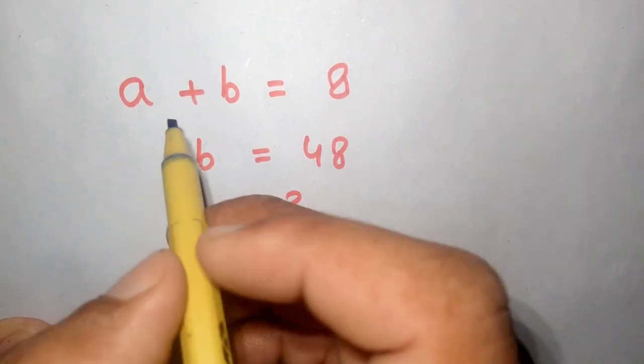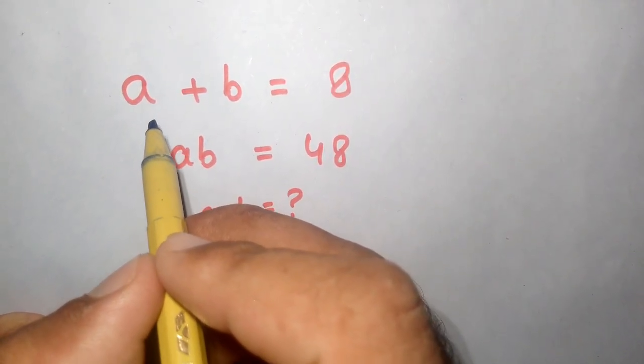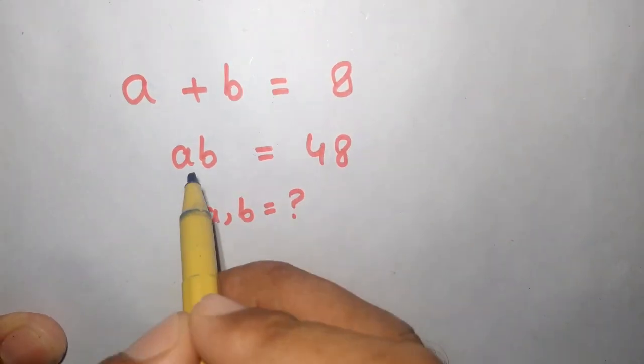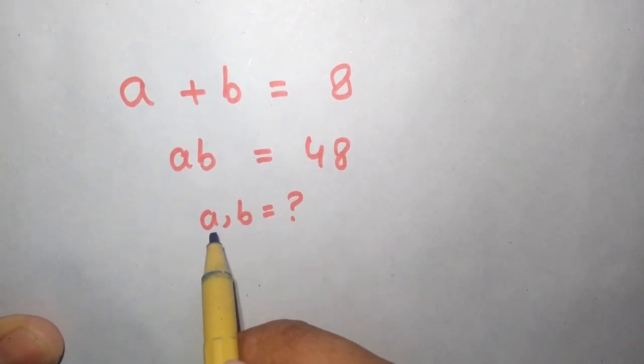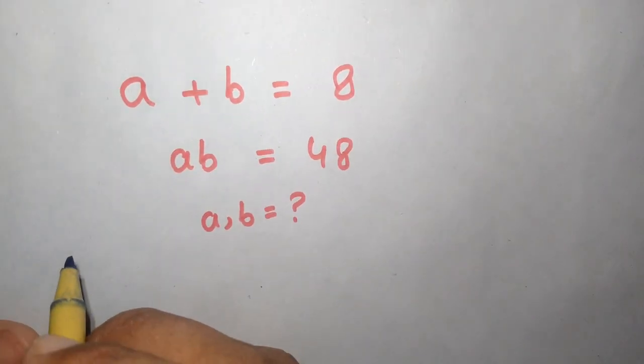Hello, welcome to the Maths Academy. We have to solve an interesting maths problem: a plus b is equal to 8 and a times b is equal to 48, and we have to find the value of a and b.